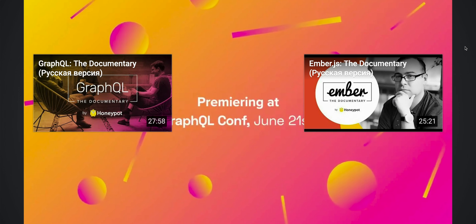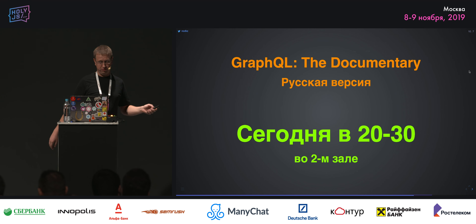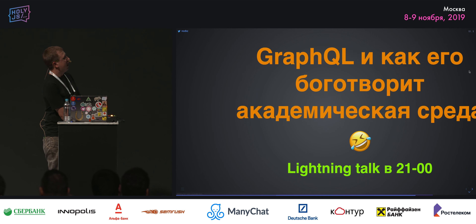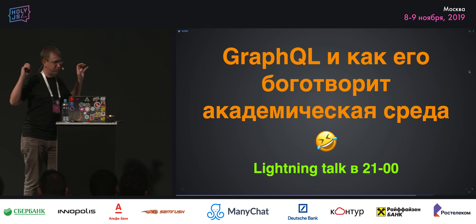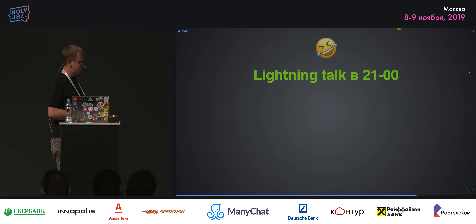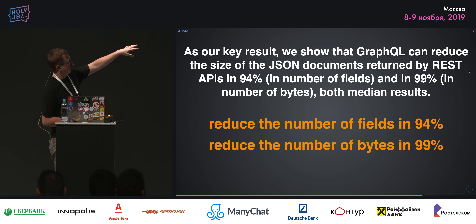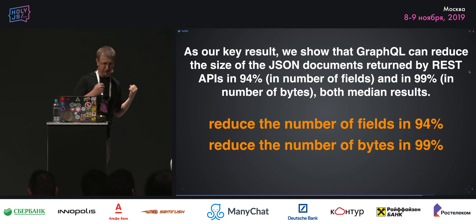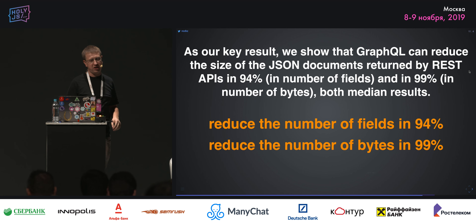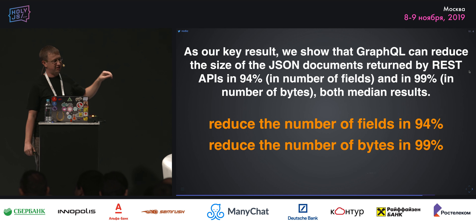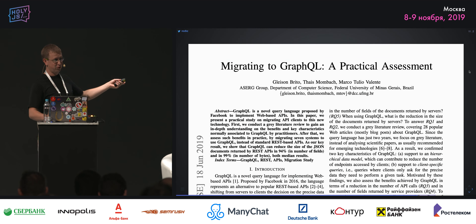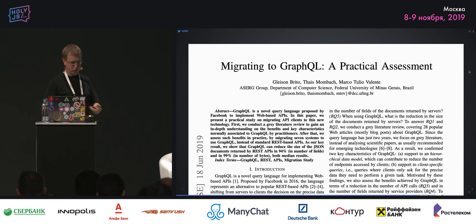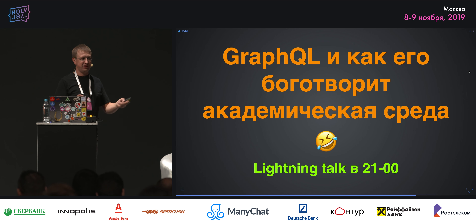Фильм будет сегодня вечером в 20:30 во втором зале. Всем рекомендую посмотреть — очень интересная история о том, как это всё создавалось. После этого у меня ещё будет lightning talk об академической среде и как она начинает боготворить GraphQL. Вот какая дичь происходит: реально умные люди делают серьёзные научные труды и говорят, что GraphQL позволяет сократить количество запрашиваемых полей с бэкенда на 94% и сократить количество байт, получаемых сервером, на 99%. И это реально научный труд, где я буду разбирать, где ребята ошибаются. Lightning talk будет приблизительно в 21:00.